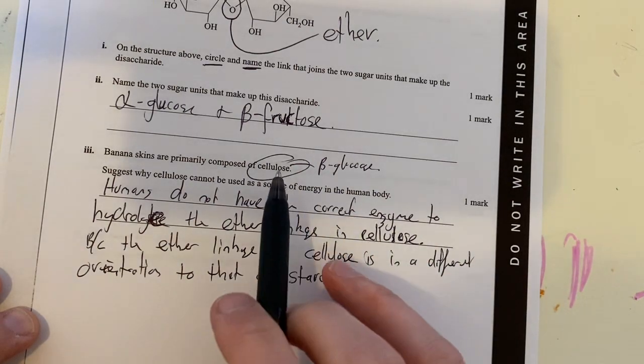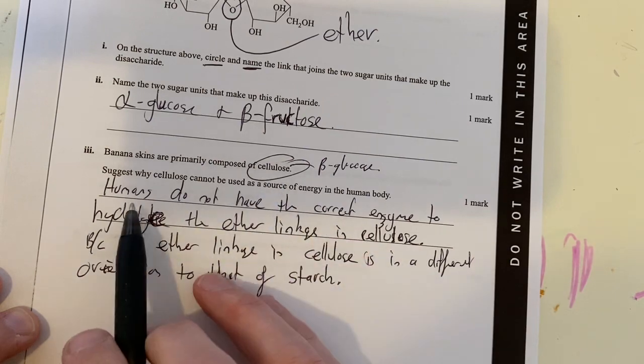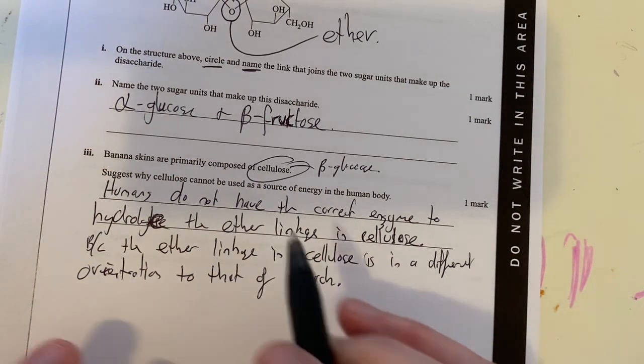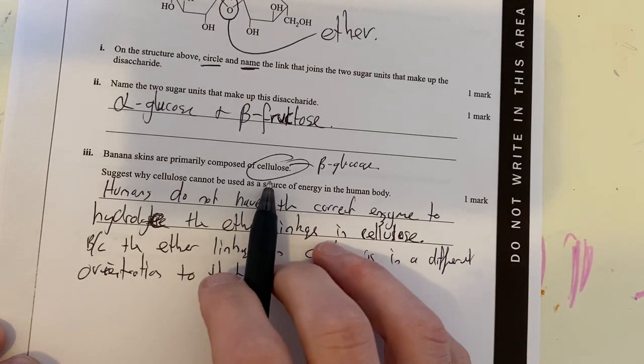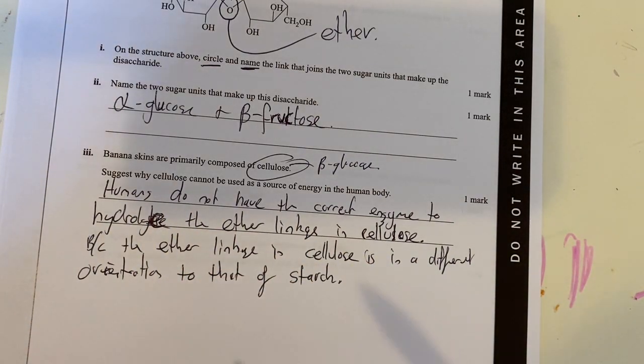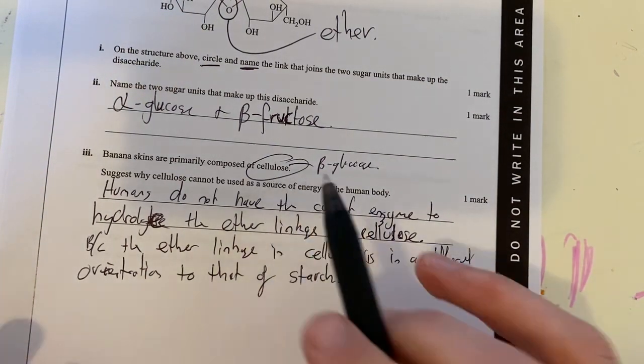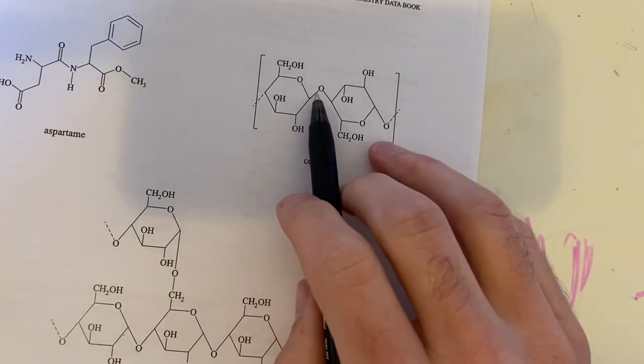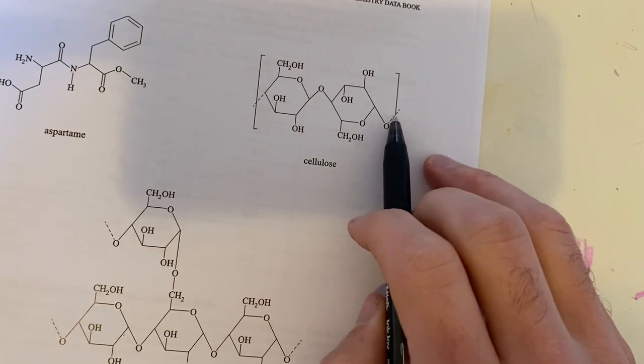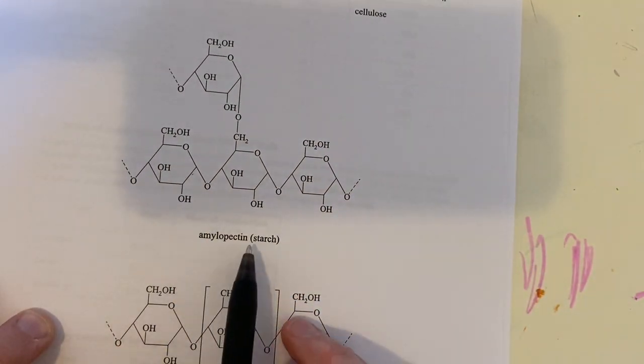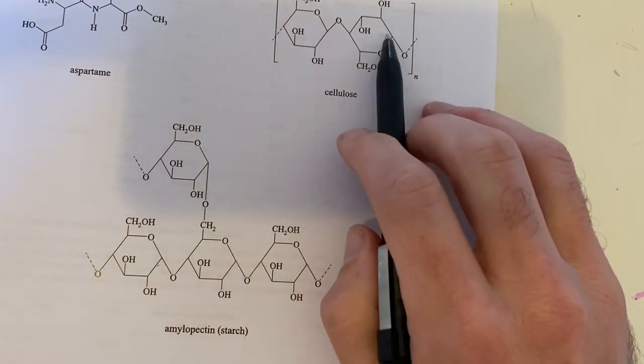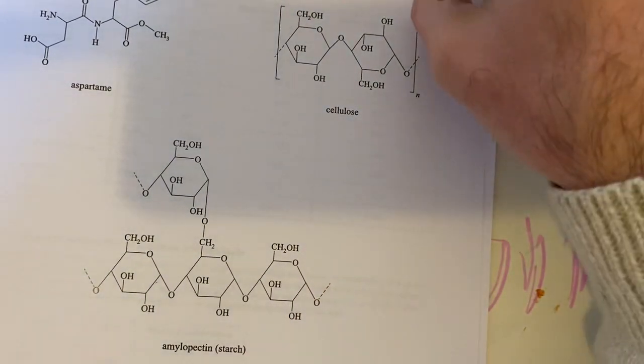Question three was talking about cellulose and why we can't actually digest it. The key thing here is to understand that cellulose requires a unique enzyme to break down, and humans do not have that enzyme. It actually requires cellulase. I don't think we need to know the name of that enzyme, but we need to know that humans don't have the enzyme that can break down cellulose. The reason why we need a unique enzyme is because of the structure of cellulose compared with starch.